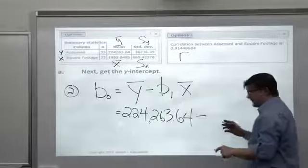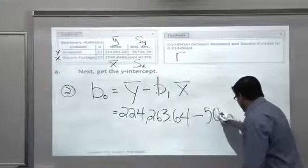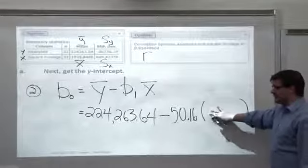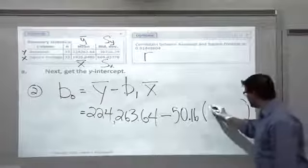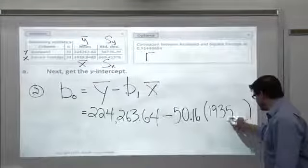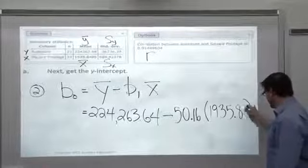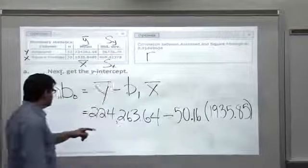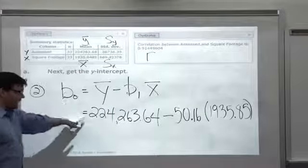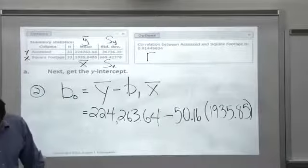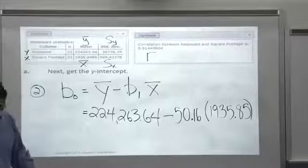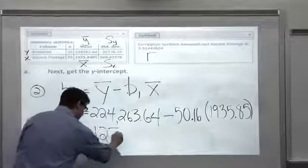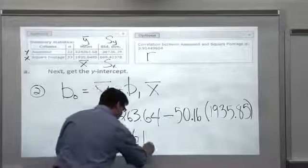We subtract off the slope. The value of the slope was a positive 50.16. So minus 50.16. And then we plug in X bar which is the average square footage, so that's the 1935 number. 1935 point, I'll round to 2, so .85. This will give us the value of the Y intercept. I have no idea what this is but I did write it down: 127,161.40.